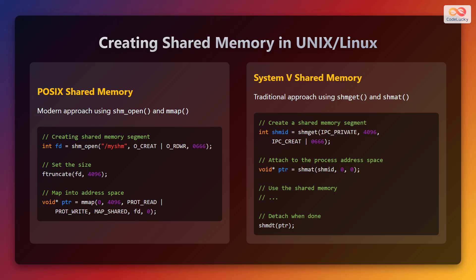Here is a code snippet for POSIX shared memory. First, create a shared memory segment using the shm_open function. Then, set the size using the ftruncate function. Finally, map it into the address space using the mmap function.